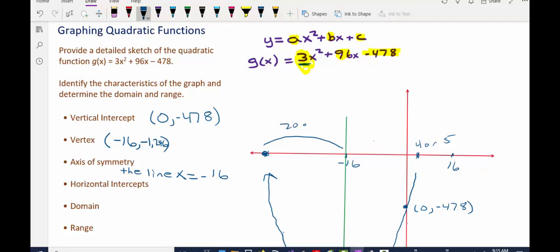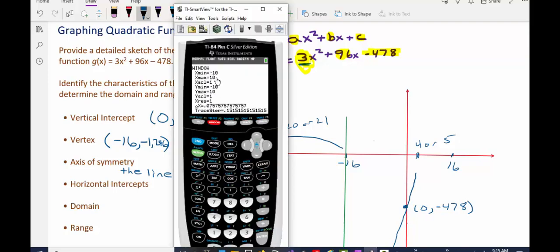So if we're 20 or 21 units away from the axis of symmetry, that puts us around negative 36 or negative 37. I just need a ballpark estimate. So when I go to my calculator, I'm going to change my x-min to something much further to the left than x equals negative 36 or 37. I'm going to pick negative 50.